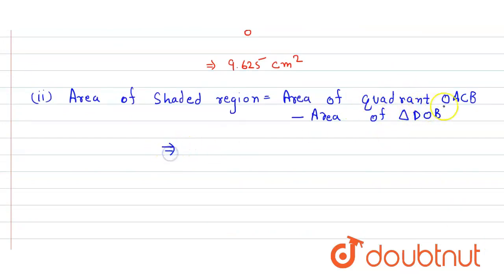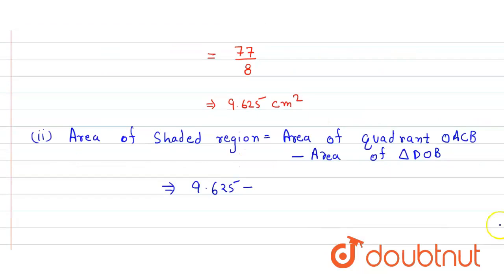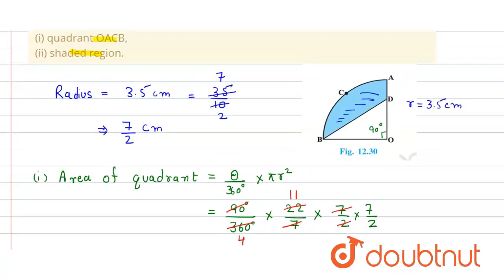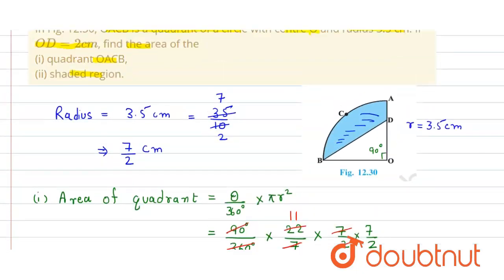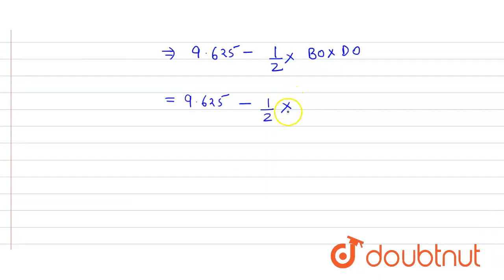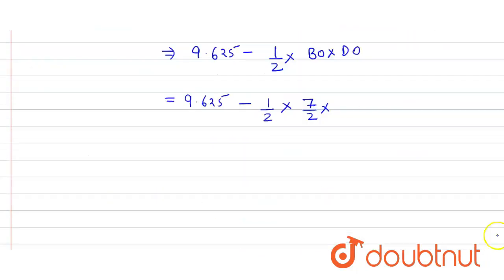The area of quadrant OACB has already been calculated as 9.625. Now, the area of triangle DOB, being a right angle triangle, equals half times base times height, where base is BO (the radius = 7/2) and height is DO.